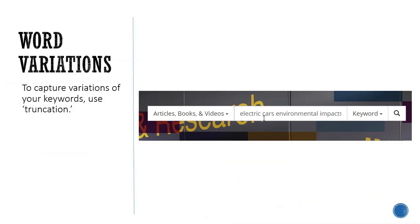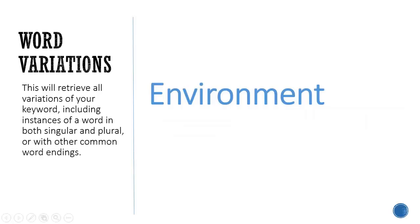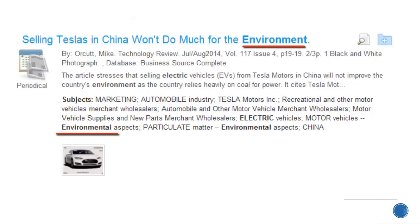To capture variations of your keywords, use truncation. To truncate, keep the main part of the word and replace the end with an asterisk. This will retrieve all variations of your keyword, including instances of a word in both singular and plural, or with other common word endings. Books and articles containing any variation of that word will be found for you.